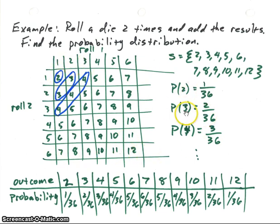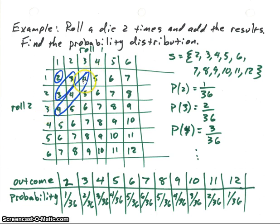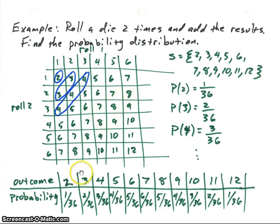If we want the probability of a three — meaning the sum of the two outcomes is three — we can have a two first followed by a one, or a one first followed by a two. There are two possibilities, so the probability of getting a three is 2/36. For fours, there are three combinations along that diagonal, so the probability is 3/36. You can see the pattern: one two, two threes, three fours, four fives, five sixes, and so on.